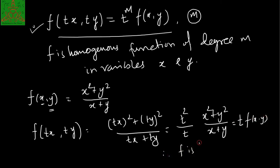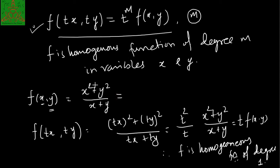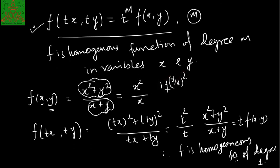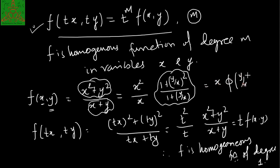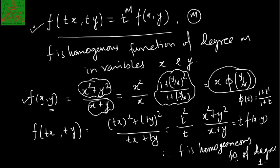So we will have t·f(x,y), which means f is a homogeneous function of degree 1 in variables x and y. Alternatively, you can factor out x² from the numerator and x from the denominator. In the numerator what remains is (1 + (y/x)²) and in the denominator (1 + y/x), giving x·φ(y/x) where φ(t) = (1 + t²)/(1 + t). In that manner also we can confirm the function is homogeneous of degree 1.